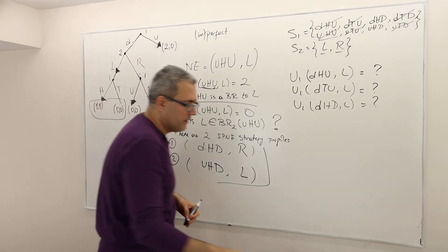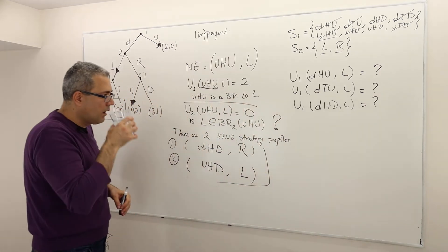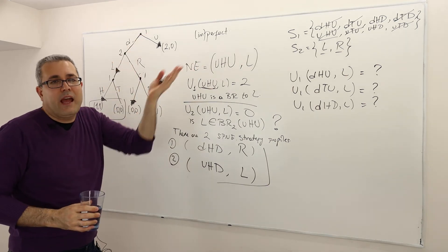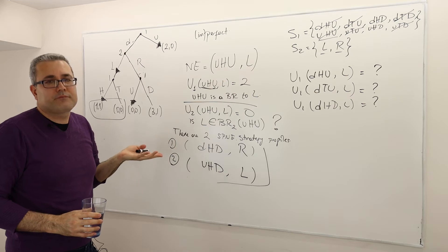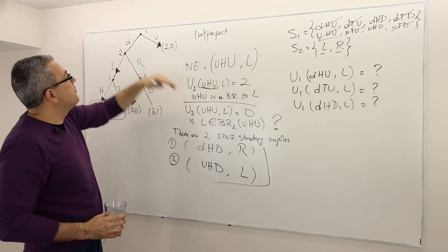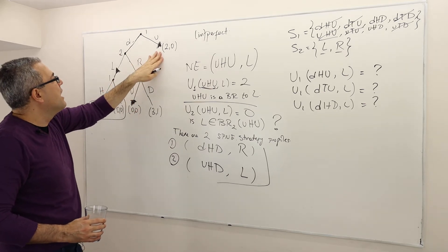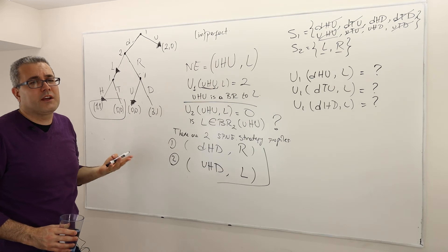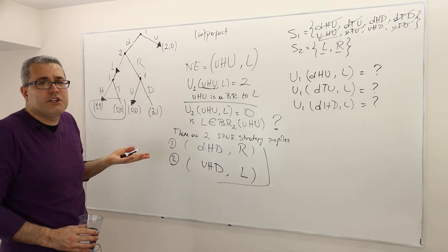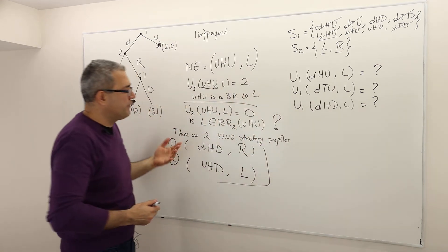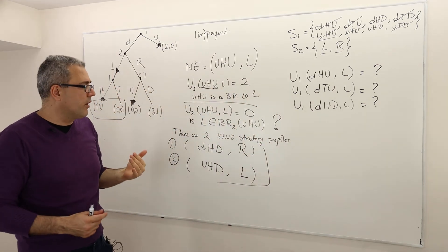No matter what his strategy is, the outcome will be two, zero, because player one plays U in the presentation though, and finishes the game. Exactly. So the game, according to this strategy, player one is going to finish the game by playing U. And so player two will never have the opportunity to choose his or her actions or strategy. So whatever she chooses, it really is irrelevant.